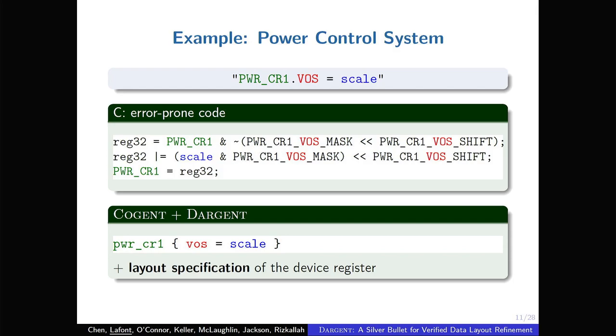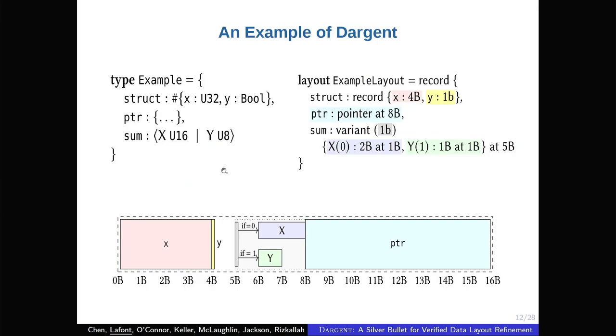So here is an example. It's an excerpt from a power control system, originally implemented in C. And this code is actually updating a field in a device register, updating it with the value scale. So it's putting the new value scale at the right location using bitwise manipulations. And this kind of code is error prone and hard to read. But now with Dargent, you can just write a single update of the field. So this is the Cogent syntax for updating the field. And it will essentially compare to the code above, but at the level of Cogent, you will not be able to see this low level of details. And of course you also need to provide a layout specification for the device register so that it compares to the right C code.